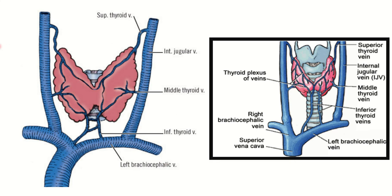This one picture is enough — there is no need for a second picture. This one picture will give all the information. Here you can see the thyroid gland and trachea, and we can see the veins which are present on either side of the thyroid gland and below the thyroid gland. We need to know the names and it is the answer.